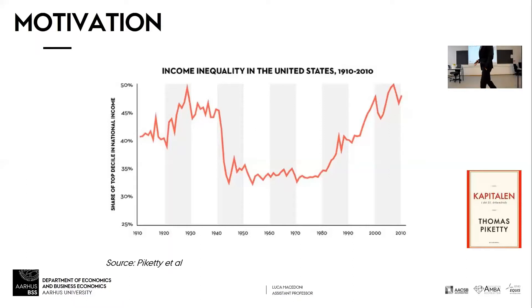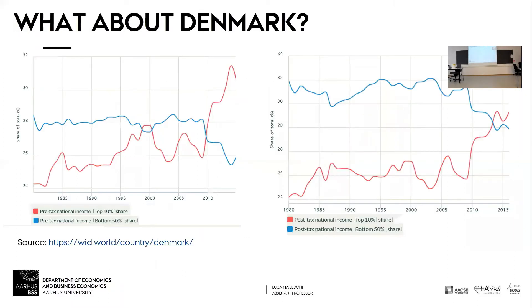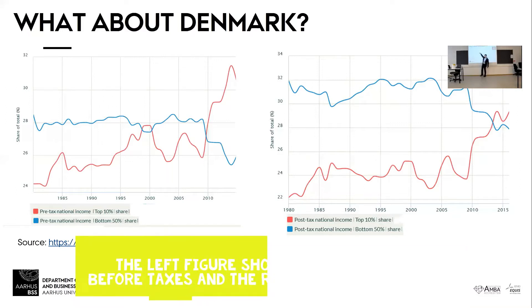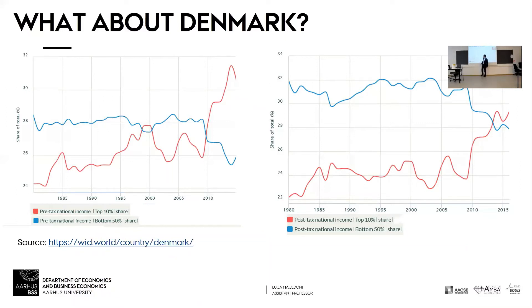You might say: that's just the US — why should we care? Well, let's look at Denmark. A similar figure shows income inequality increasing from the 80s until today, with a huge spike right after the financial crisis. On the other hand, if you look at the bottom 50% — the poorest 50% of the Danish population — you have a fairly stable line that then drops in the mid-2000s.